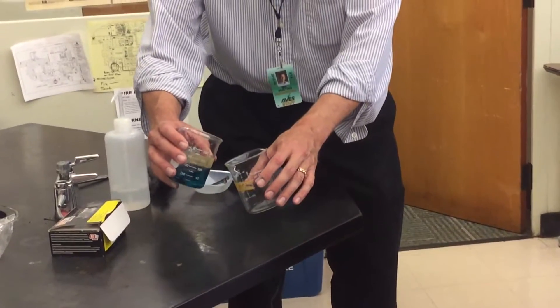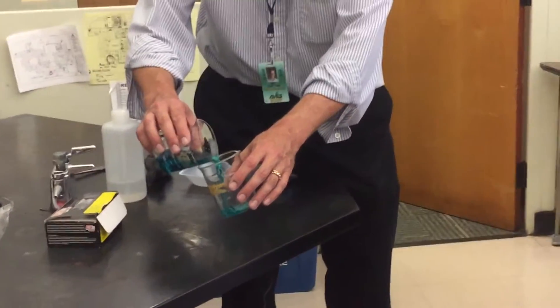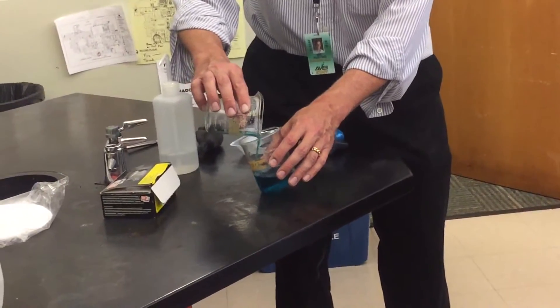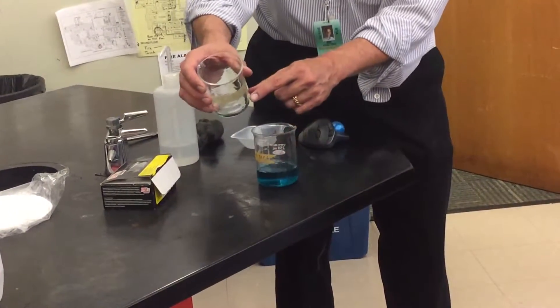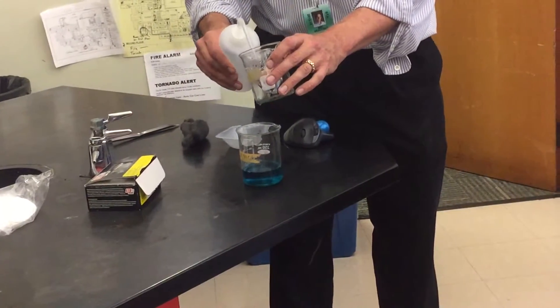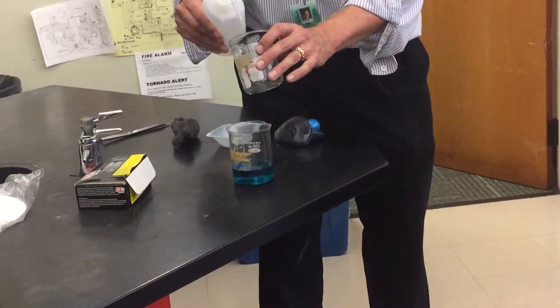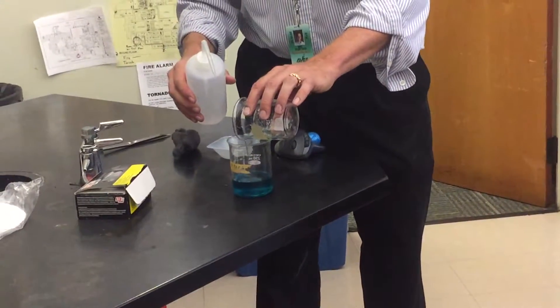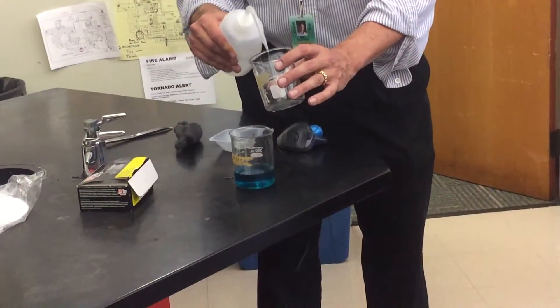Now, to decant means pour off the liquid and save the solid. And then it says to wash, and you can see we've got some brown solid. Now, you'll have a lot more brown solid, so we want to wash this off a couple times. Okay, you just pour off the water, you want to save the solid, we just want to clean off that copper.